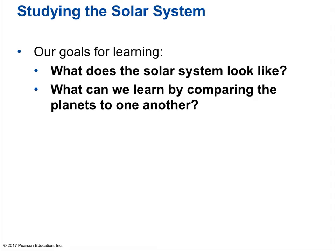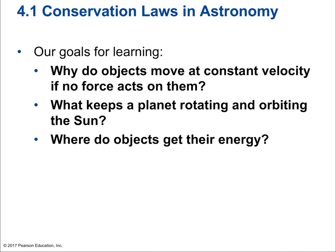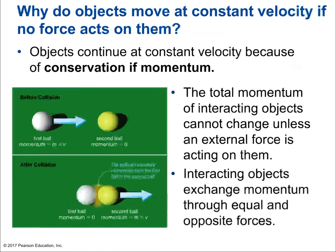Studying the solar system, we want to understand what it looks like and what can be learned by comparing the planets to one another. Before we do that, let's get into the conservation laws in astronomy. Why do objects move at constant velocity if no force acts on them? What keeps a planet rotating and orbiting the sun? And where do objects get their energy?